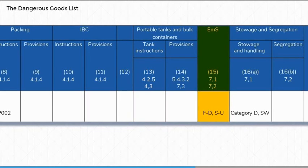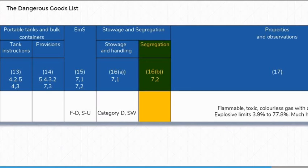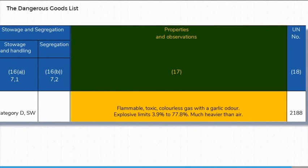Column 15 contains two codes referring to guidance to be used in the event of spillage or fire. These codes are known as emergency schedules. The first EMS code refers to the fire schedule. The second EMS code refers to the spillage schedule. Column 16A contains the stowage and handling codes. Column 16B contains the segregation codes, starting with the letters SG, and segregation groups, starting with the letters SGG. Column 17 contains properties of and observations on the dangerous goods listed.